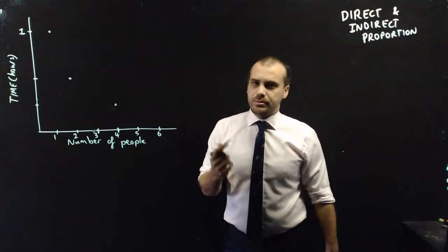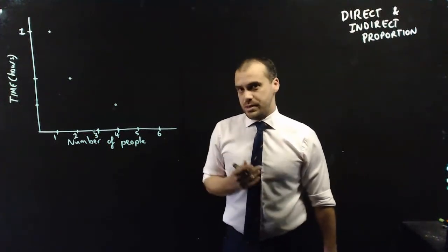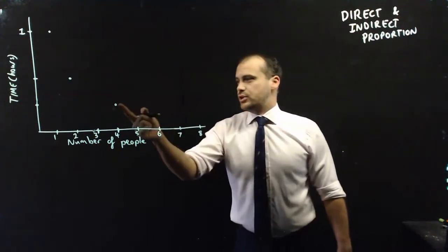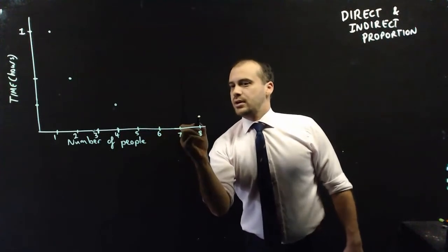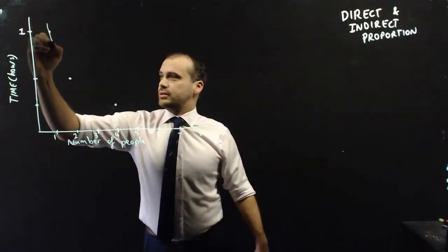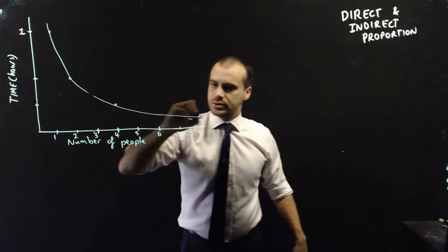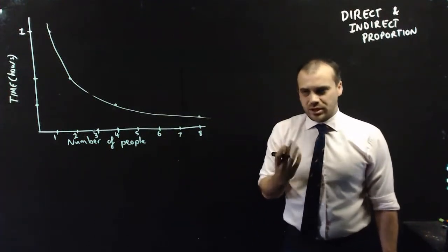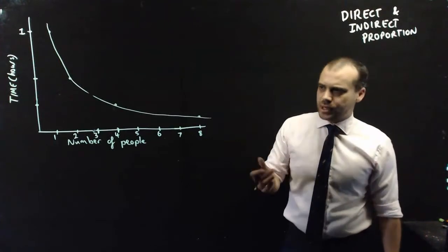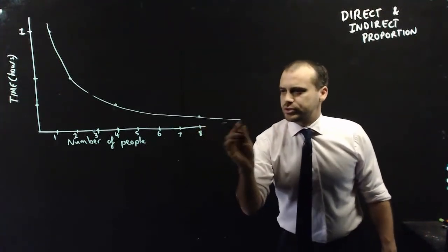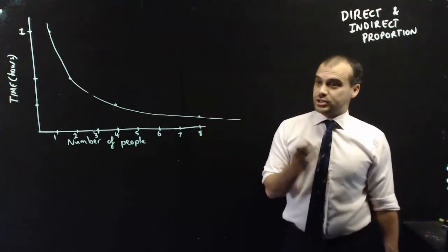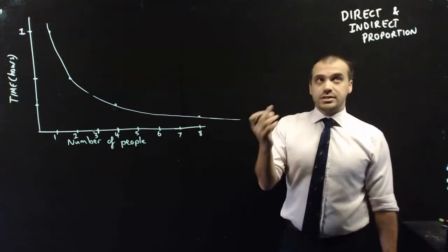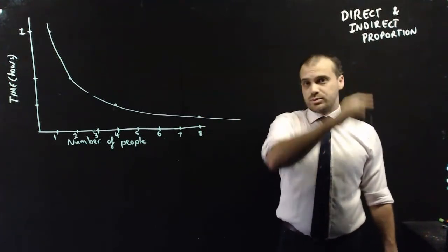And just to drive home the point, what if four more people came? It's going to take half the time again. And what we get is this thing that looks like this. And it's always going to take some time to dig a hole, even if you had like a million people. So, we're getting closer and closer and closer to time zero without ever touching. It's asymptotic. This is an example of indirect proportion.